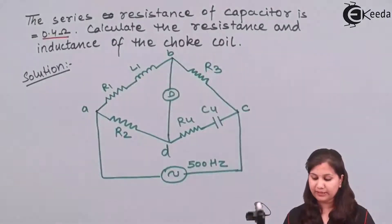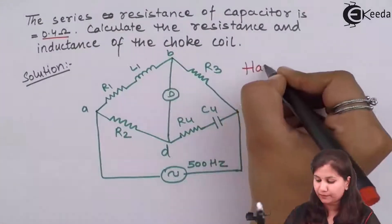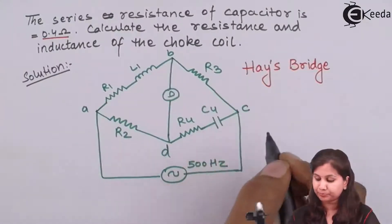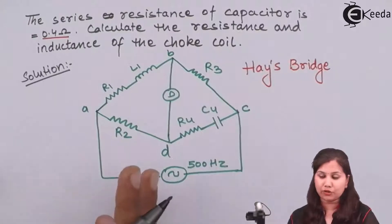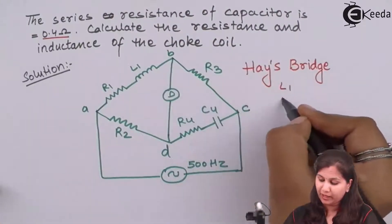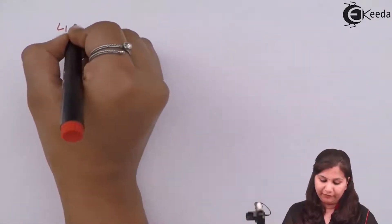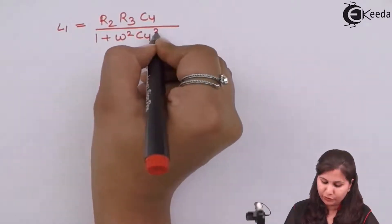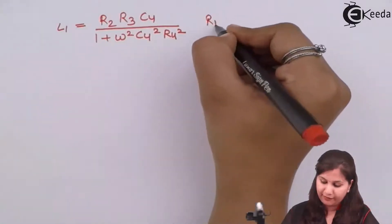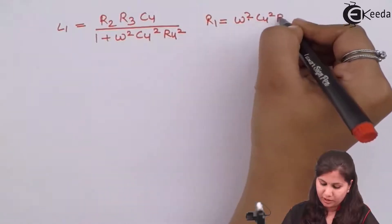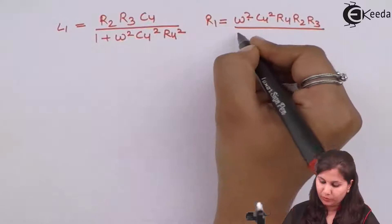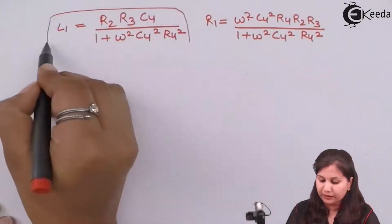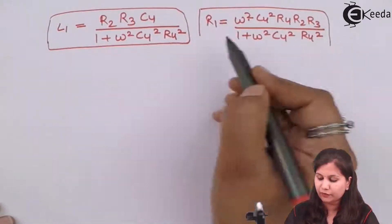When we analyze this bridge we see that it is the Hays bridge, which is used for the measurement of inductance by comparing it with a standard capacitor. We can directly use the balance equations: for L1 the value is R2·R3·C4 divided by (1 + ω²·C4²·R4²), and for R1 it is ω²·C4²·R4·R2·R3 divided by (1 + ω²·C4²·R4²).